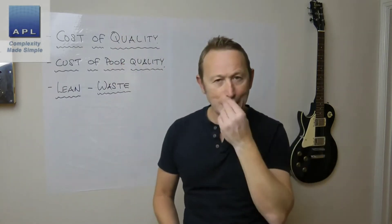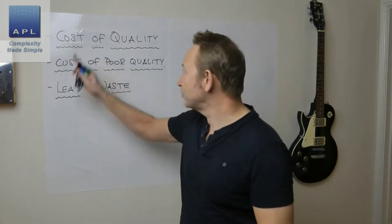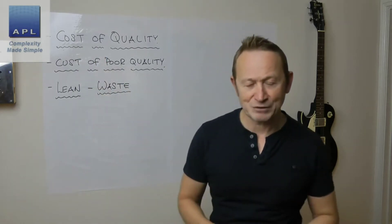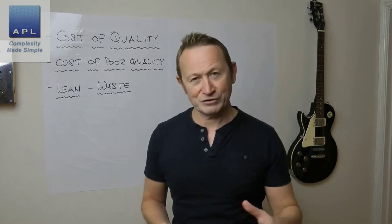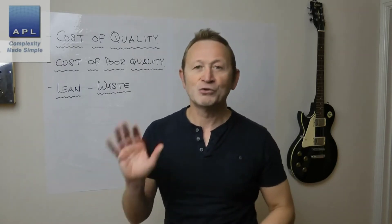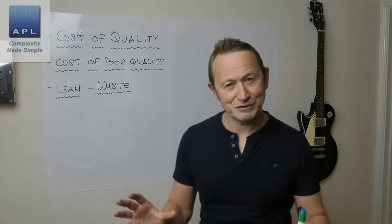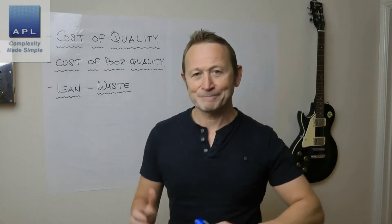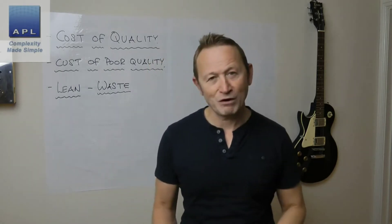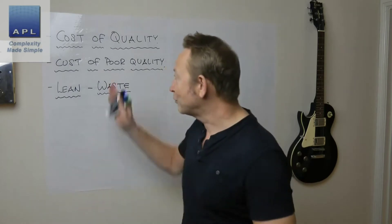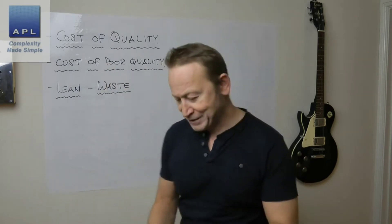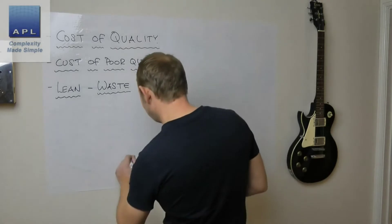We're going to cover these three areas in that order. The first one — and I think the most important — is the cost of quality, because the cost of quality tells you whether you need something like Six Sigma in your company. It doesn't have to be called Six Sigma — you might just have a project to dramatically improve quality, and the cost of quality is going to tell you.